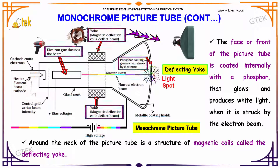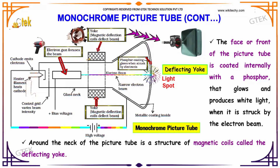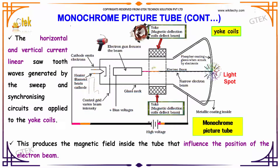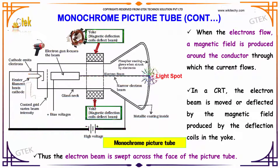Around the neck of the picture tube is a structure of magnetic coils called the deflecting yoke. The horizontal and vertical current sawtooth waves generated by the sweep and synchronizing circuits are applied to the yoke coils. This produces a magnetic field inside the tube that influences the position of the electron beam. These two factors decide the position of the electron beam. This is how the yoke is arranged.